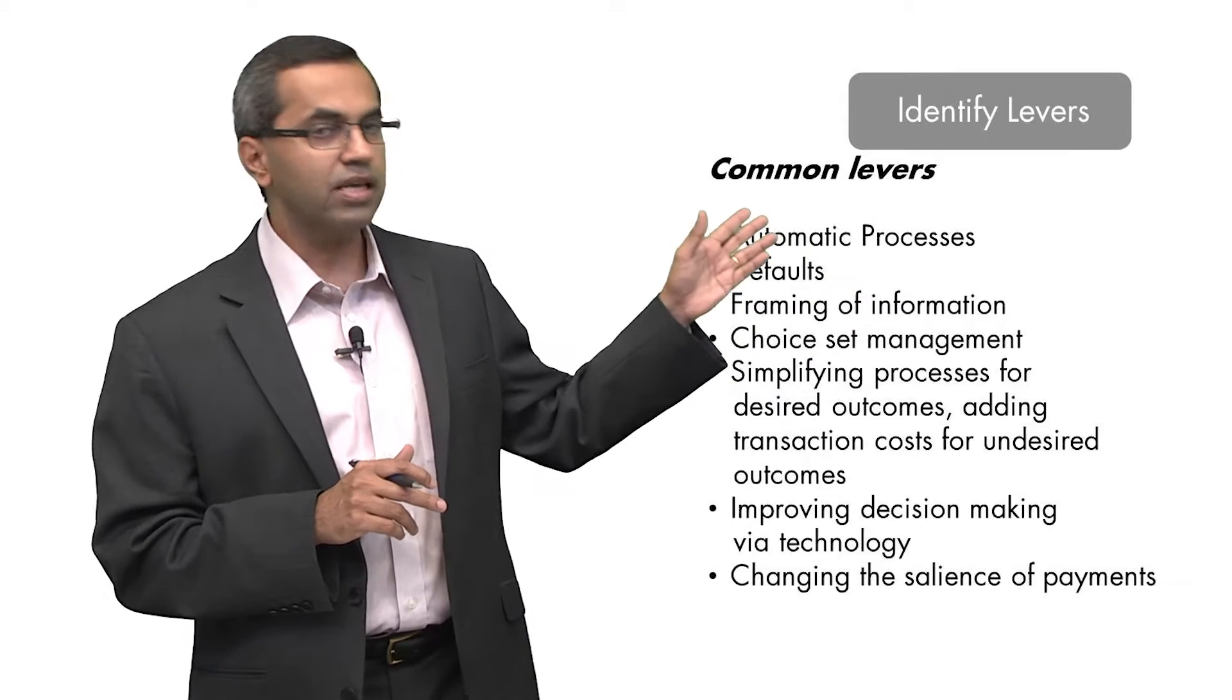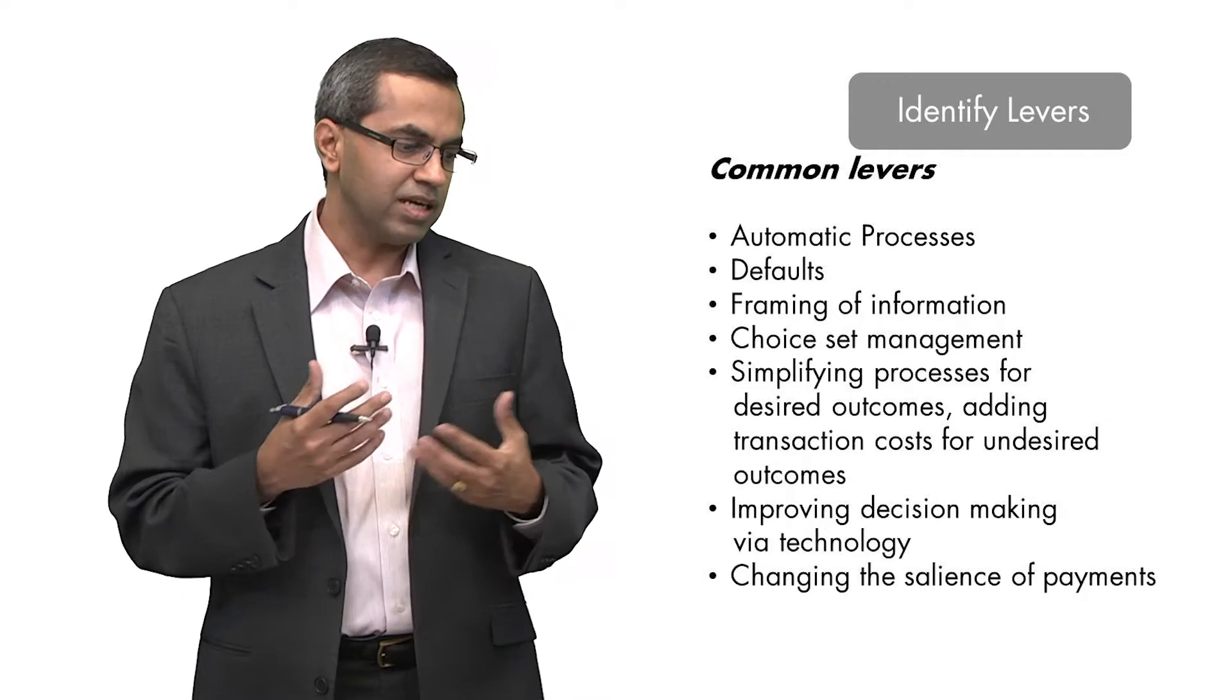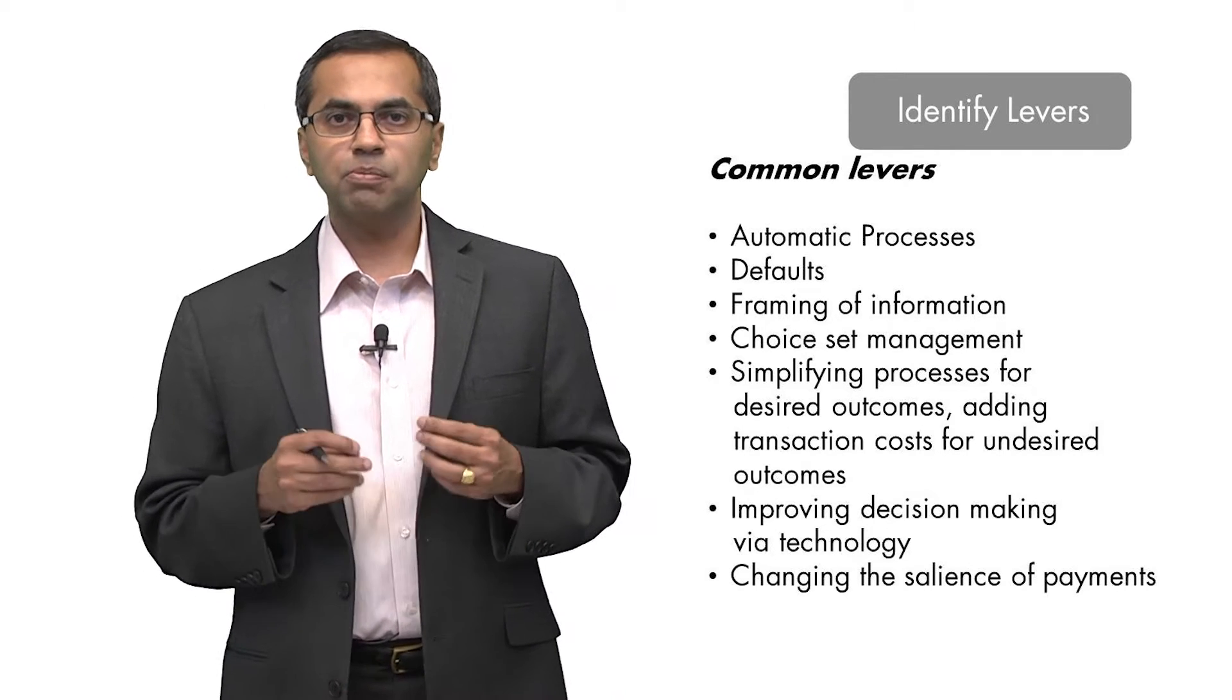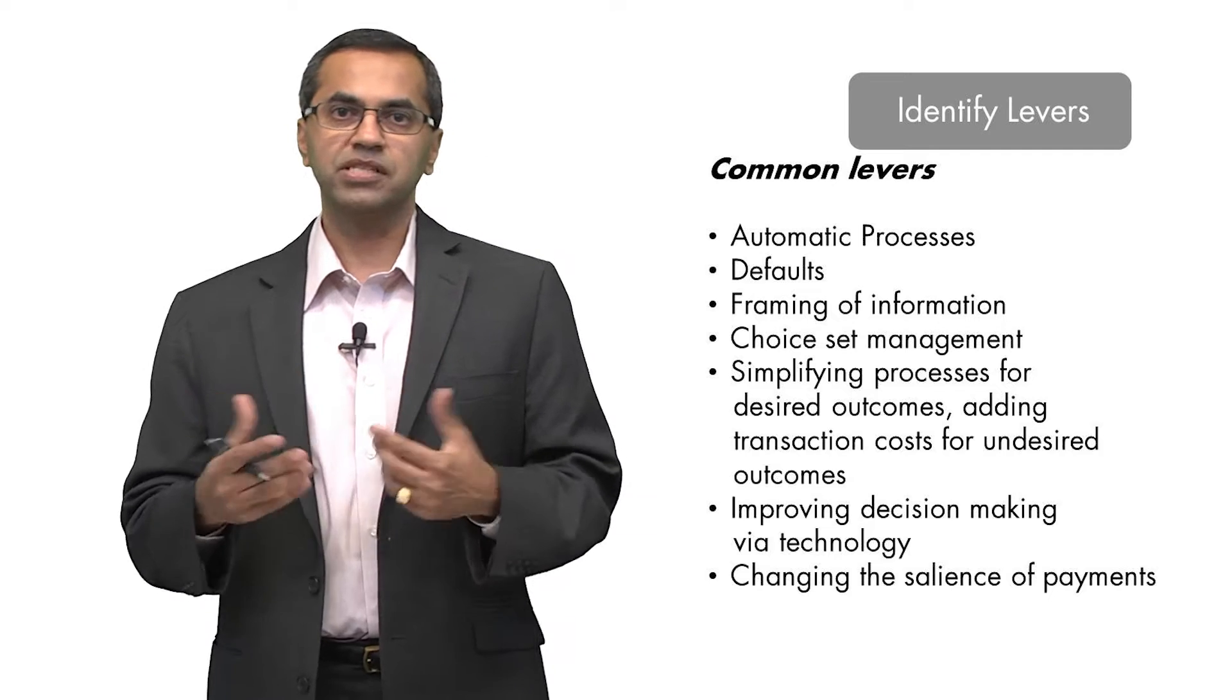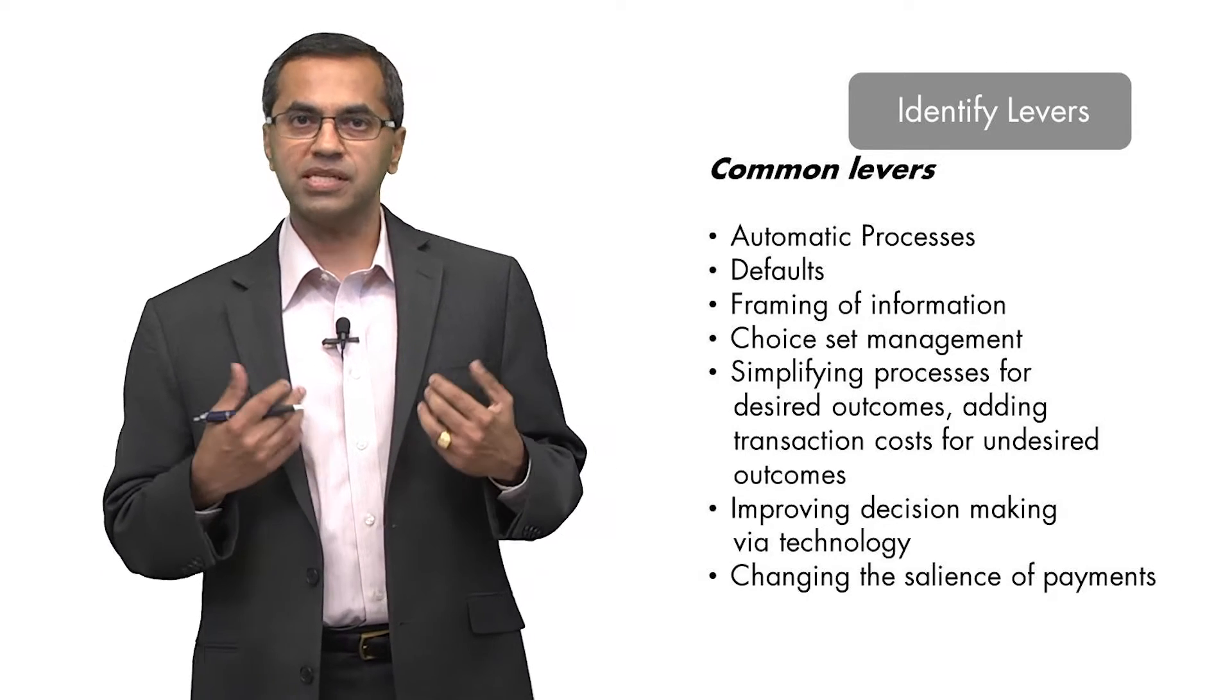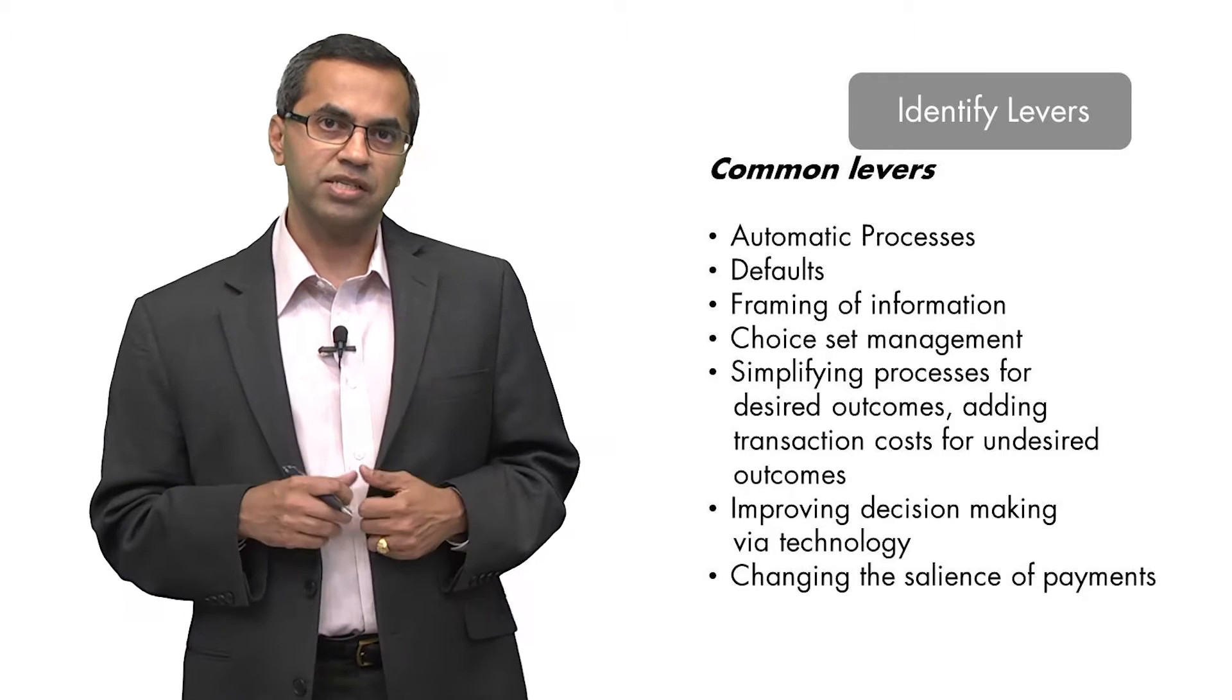What you see here is a list of common levers that we use in implementing some of those nudging strategies. Let's start with a simple lever: automatic processes. Suppose you get people to automatically enroll in organ donation programs or in retirement savings programs. It just removes one step from the process because now they don't need to open accounts—they're already part of the process. So that's a very powerful, simple nudging strategy.